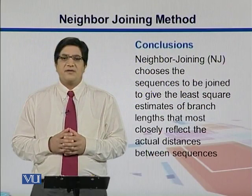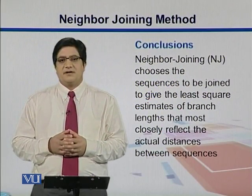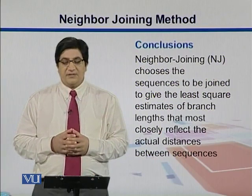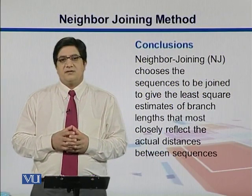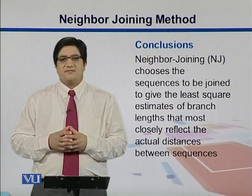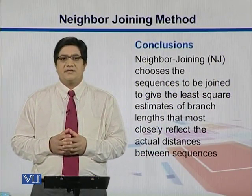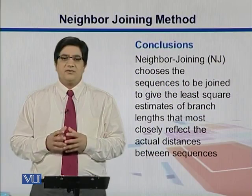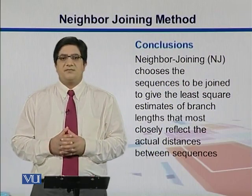The Neighbor Joining method is like the Fitch-Margoliash method, where we take sequences and join the neighbors with one another in clusters. In the end, we take those clusters and put them together in the shape of a tree.